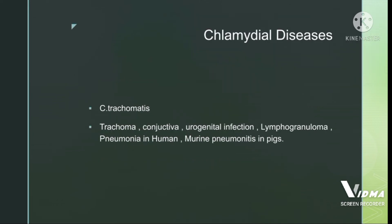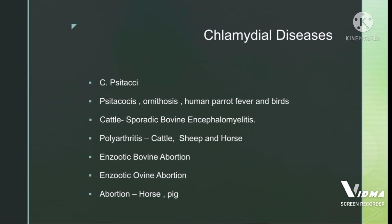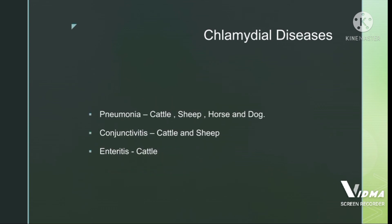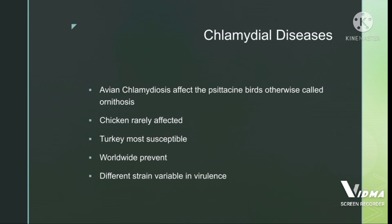Chlamydia trachomatis causes trachoma, conjunctivitis, urogenital infection, lymphogranuloma, and pneumonia in humans, mice, and pigs. Chlamydia psittaci causes psittacosis/ornithosis in humans (parrot fever) and in birds and cattle. In cattle, it causes sporadic bovine encephalomyelitis. In cattle, sheep, and horses it may cause polyarthritis. In sheep it may cause enzootic bovine abortion. In horses and pigs it may cause abortion. In cattle and sheep it causes pneumonia.